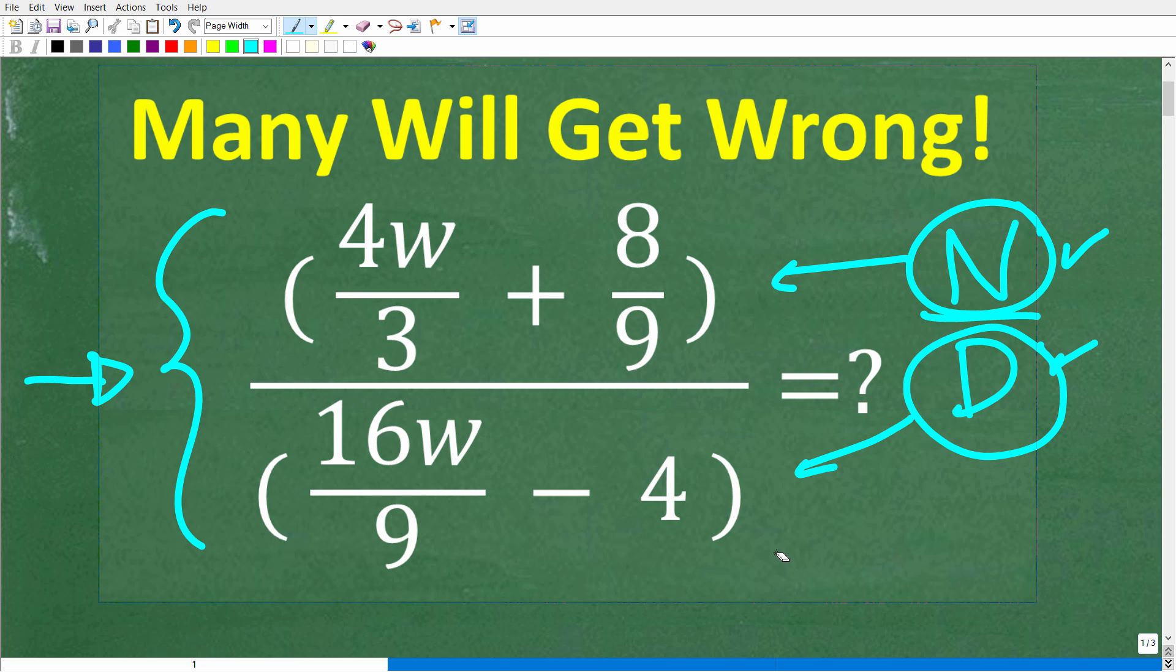Let's take a look at the problem. We have as our numerator 4w over 3 plus 8 over 9, and our denominator is 16w over 9 minus 4. So we are trying to simplify this complex fraction. If you think you know the answer, go ahead and put that into the comment section. I'll show you the correct solution in just one second, and of course I'm going to show you the precise steps you need to take to simplify this complex fraction.